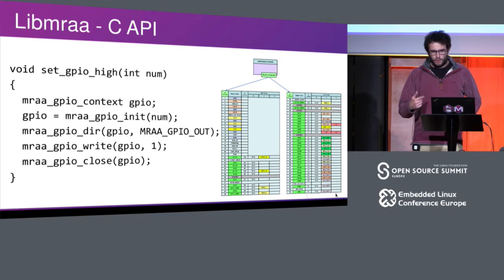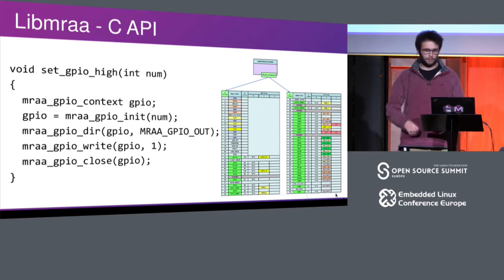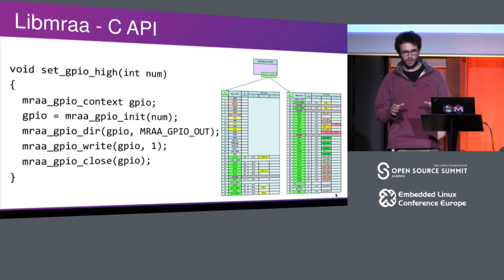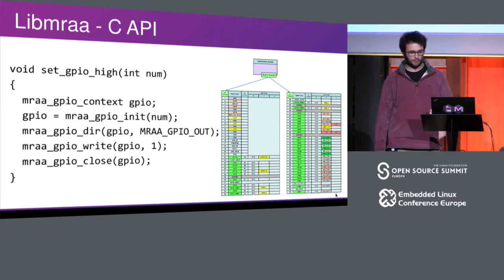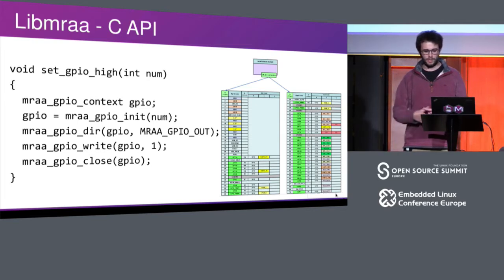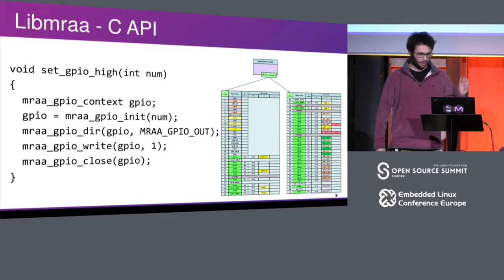We find a lot of manufacturers do really good SoC-level IO support, but then an ODM turns up, makes a random board, puts a bunch of GPIOs on it that aren't controlled by normal means, and there's no mainline kernel support. It's especially common with add-on and daughter boards and SoM designs.